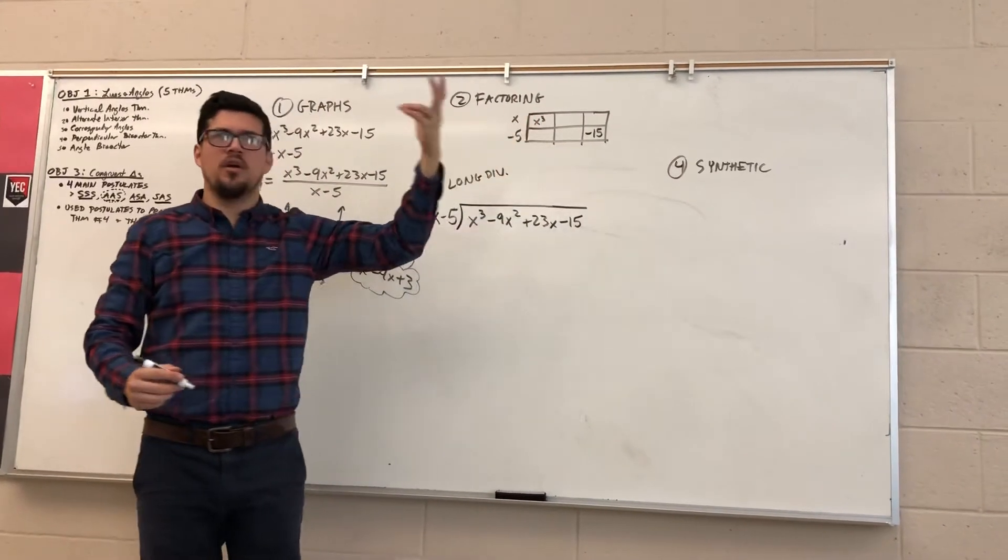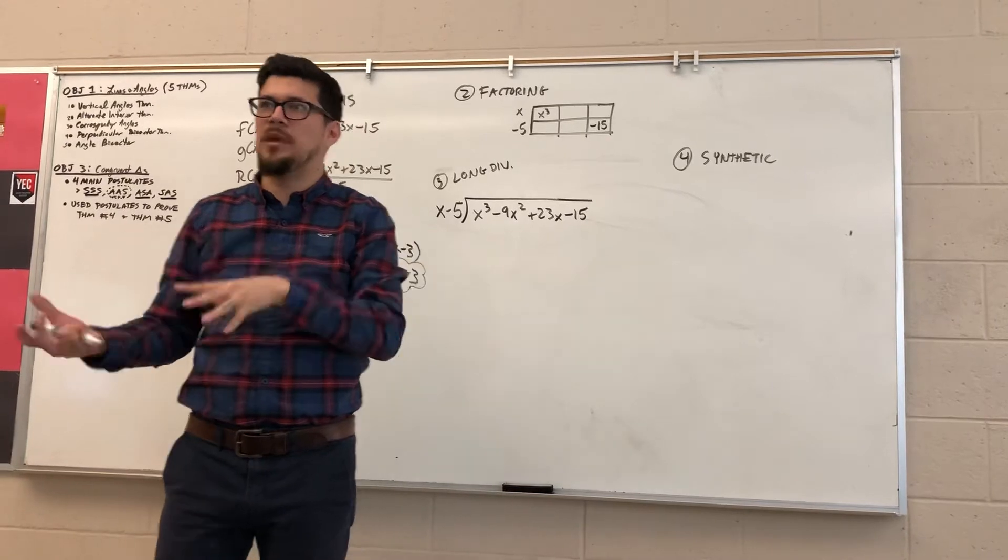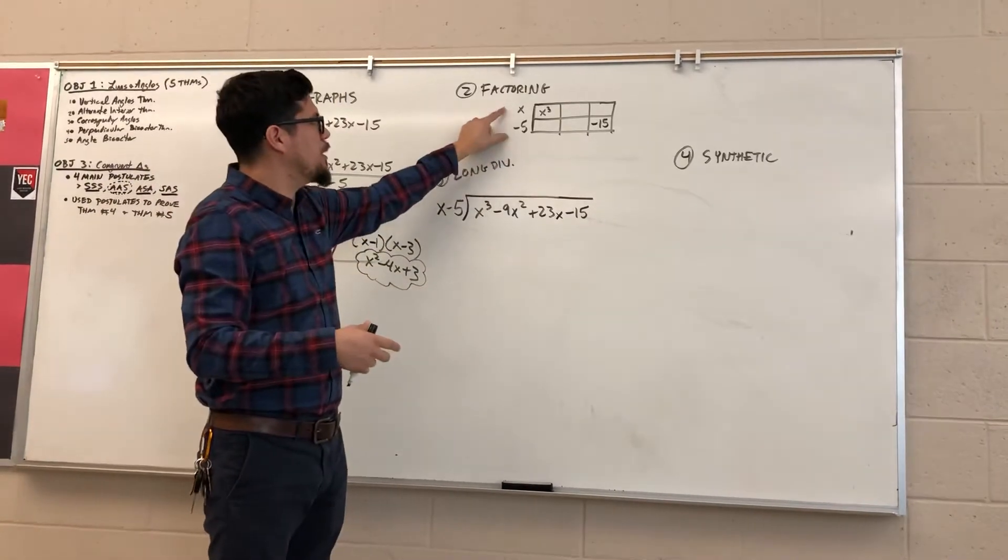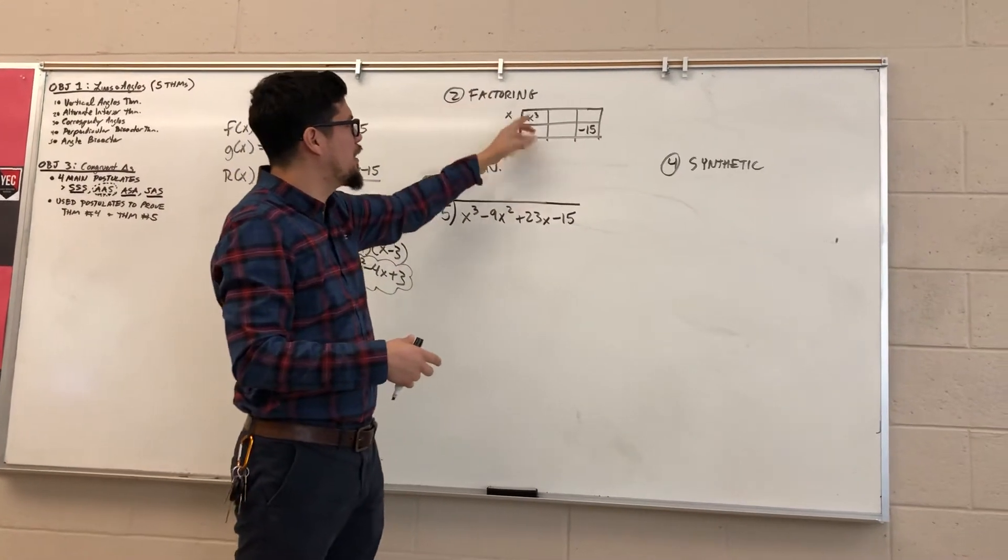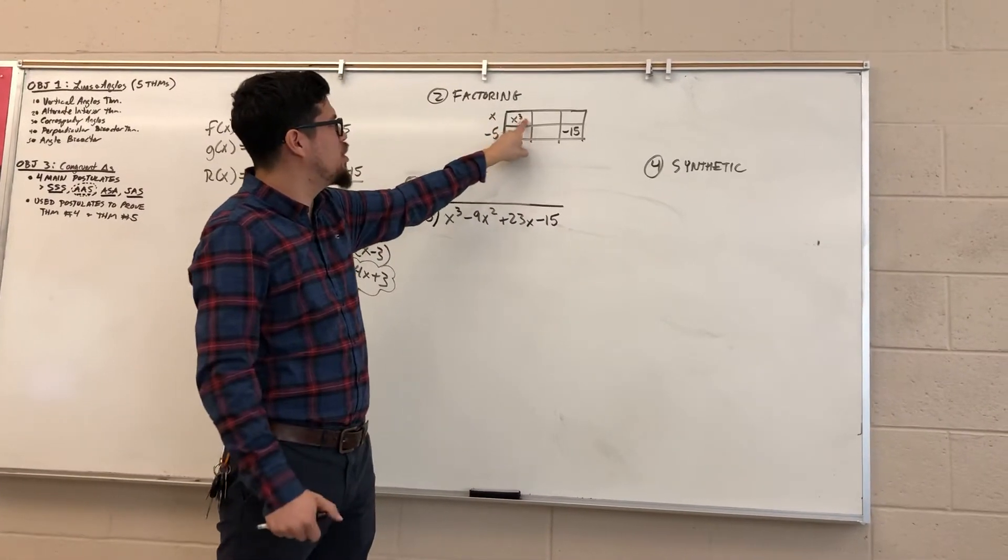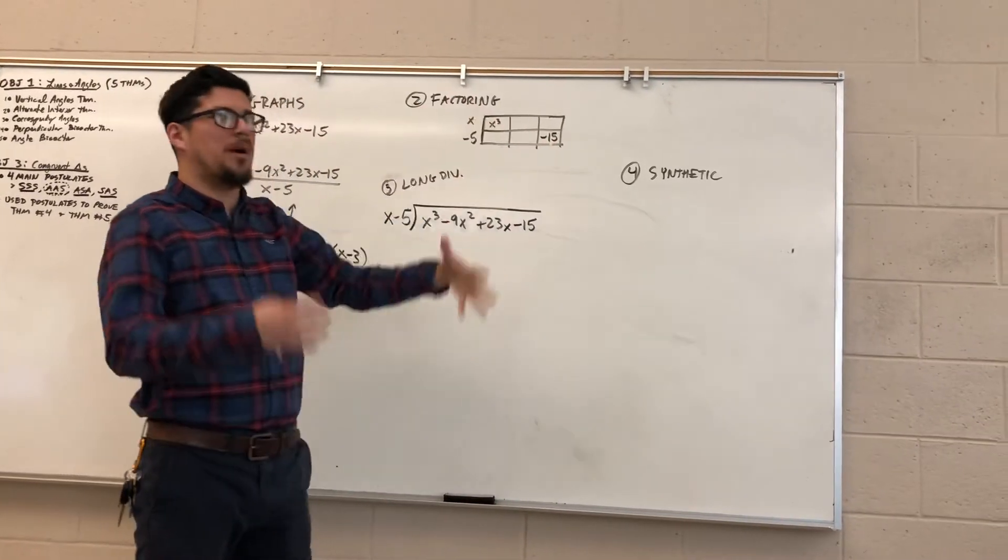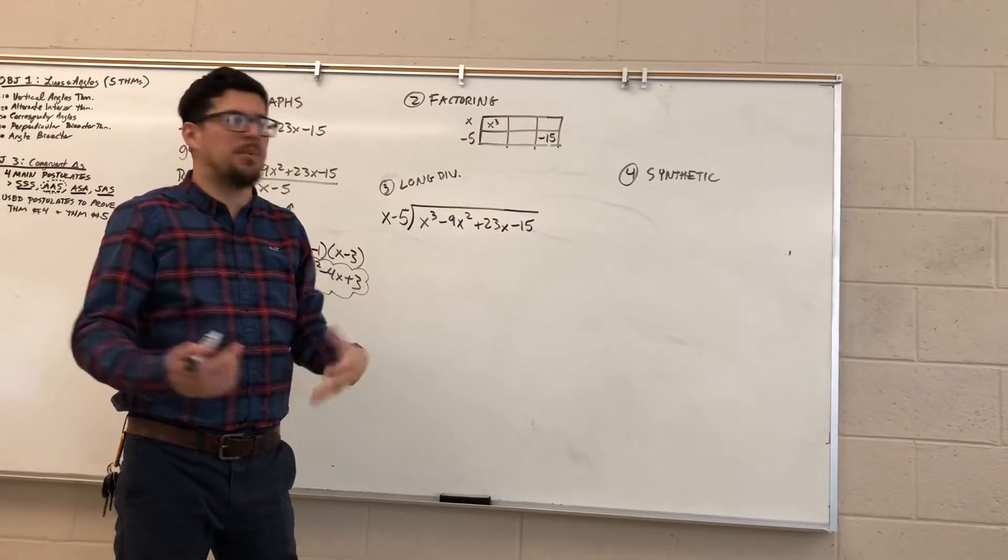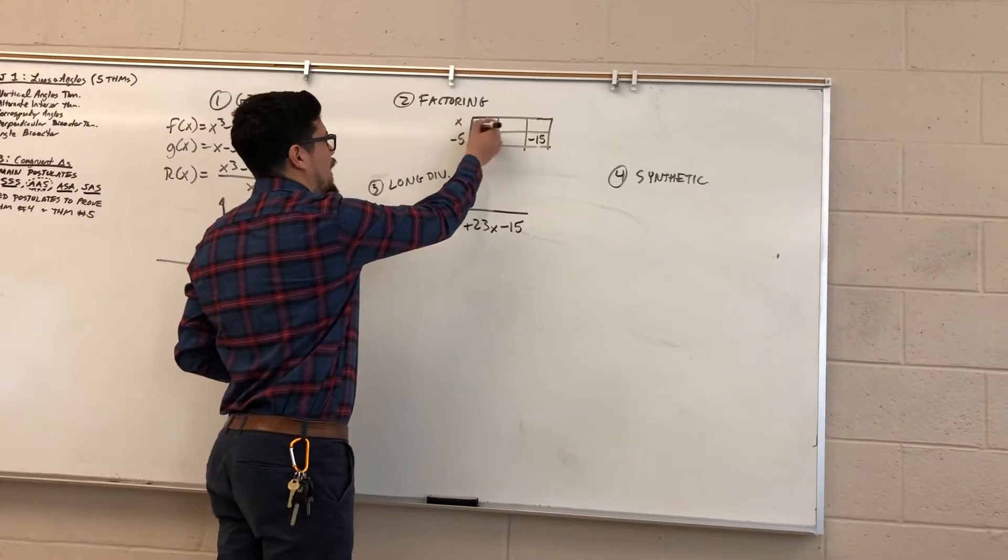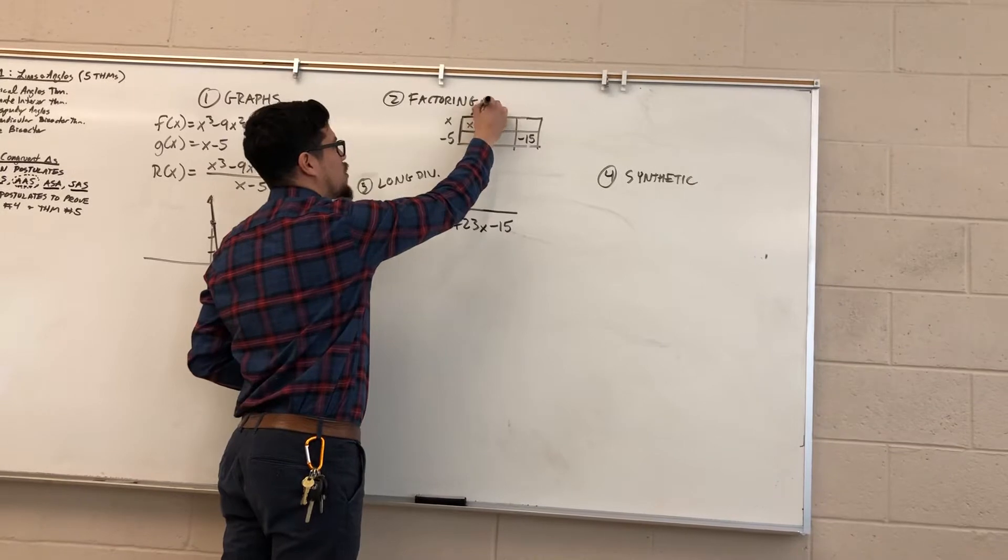If you remember when you could factor quadratics, you could always make a box to multiply them and to factor them. So I'm going to attempt to make this box, except since it's a cubic I have an additional dimension. I know that this top left box is going to be x cubed, this bottom right box is going to be negative 15. What will multiply to x to give me x cubed? It's x squared.